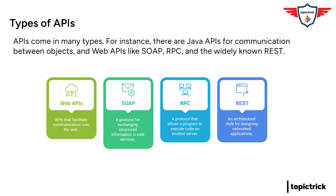What about the one everyone seems to be talking about these days? REST. REST, or Representational State Transfer, is currently the most popular architectural style for web APIs. REST is designed to be lightweight, flexible, and easy to use — kind of the opposite of SOAP in a way. REST APIs leverage the existing infrastructure of the internet using HTTP for communication, and they can handle various data formats such as JSON and XML. It's also highly scalable, which is why it's become the go-to choice for many large-scale web applications.